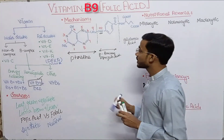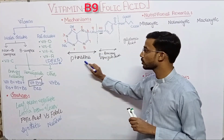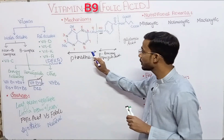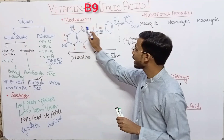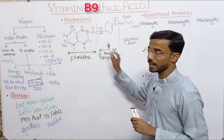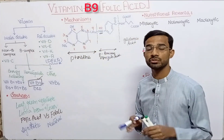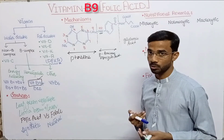Our main focus is on the pteridine ring, and we number its carbons and nitrogens 1 through 10. These are the different numberings of the carbons and the nitrogen in the pteridine component.